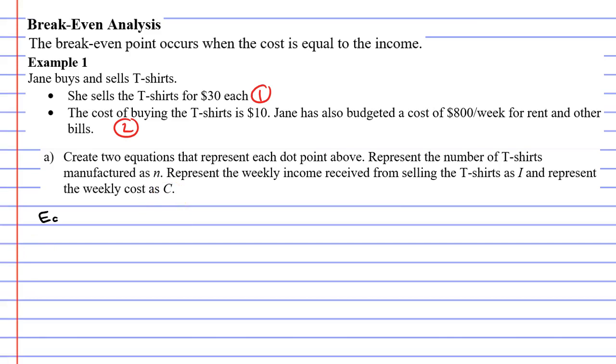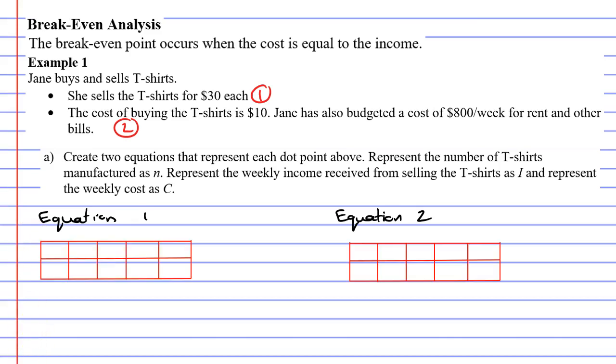So we'll do equation one on the left and we'll do equation two on the right. And it's really helpful to put down a table of values. In the top row, we're going to write N, because N is supposed to represent the number of t-shirts manufactured. And we're going to do that for both equations.